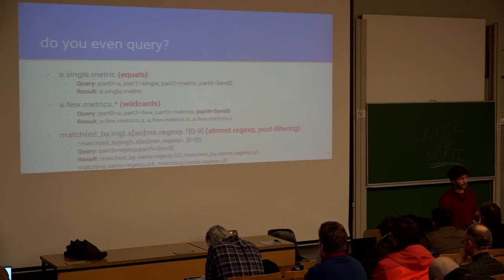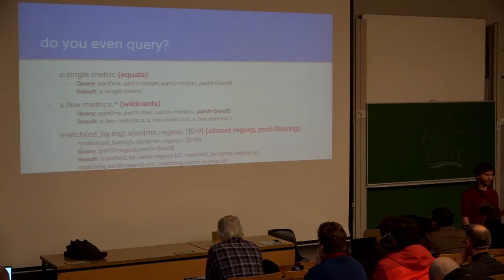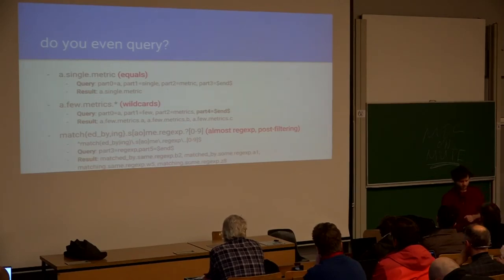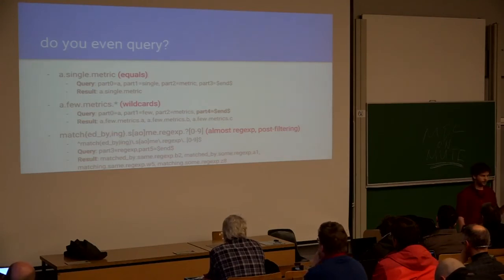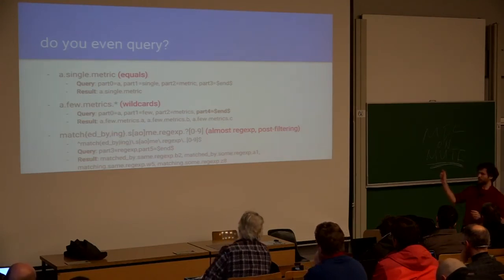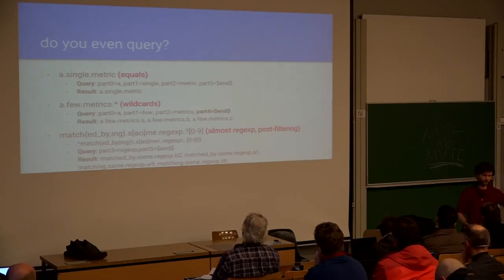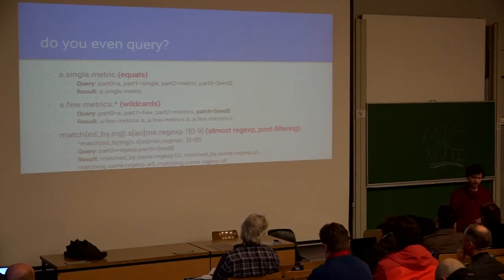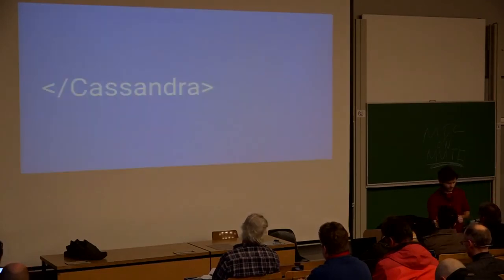After 50 million metrics, SASI stopped working well and we sometimes spent multiple seconds just finding metrics. When you have 100 graphs to display and each takes 5 seconds, that's not optimal. So what we did more recently is switch from SASI to using Lucene inside Cassandra instead. We just convert the Graphite glob expression to a Lucene expression and let Lucene handle the search. We're still not using Elasticsearch — we don't need to manage another database — but we get a much better indexing engine.